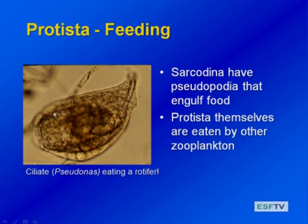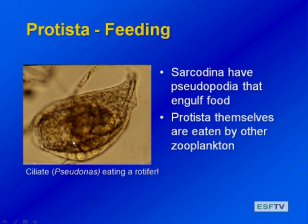Here we have a multicellular zooplankton — a rotifer that's been ingested by a ciliate. There's going to be an overlap in size: some of these single-celled protists that we've discussed as microzooplankton are going to be the same size as some of the smaller multicellular metazooplankton. So there's this size overlap in range between different types of organisms.